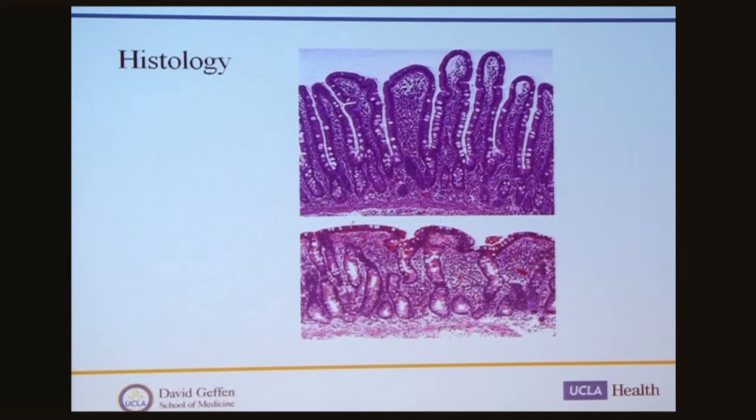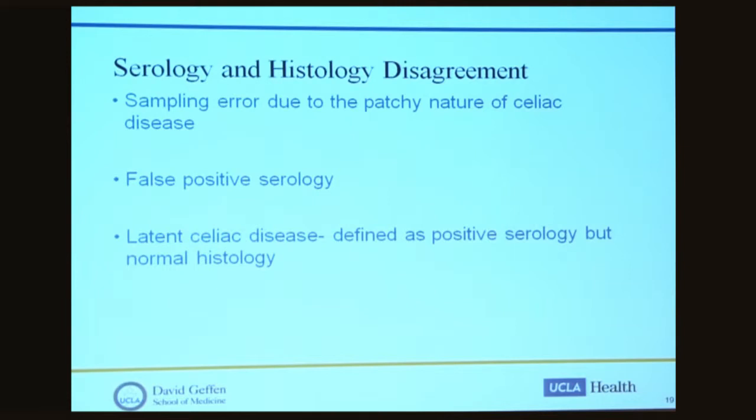What happens when serology and histology don't agree — for example, a positive serology but a negative biopsy? This can be due to sampling error secondary to the patchy nature of celiac disease, or in rare situations, a false positive serology. The most common situation is latent celiac disease, defined as positive serology but normal histology. We don't fully understand the implications of latent celiac disease, as we don't know how many of these patients will develop full-blown celiac, and therefore we cannot make recommendations regarding whether they should adopt a gluten-free diet.